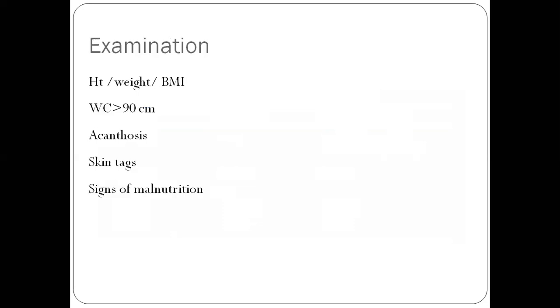After history, you can do examination, look at height, weight and BMI. Waist circumference more than 90 suggests abdominal obesity. Some people with lower BMI may also have higher waist circumference. Those should also be considered obese. Acanthosis points towards insulin resistance, so does skin tags. You can have signs of malnutrition if you have pancreatic diabetes.